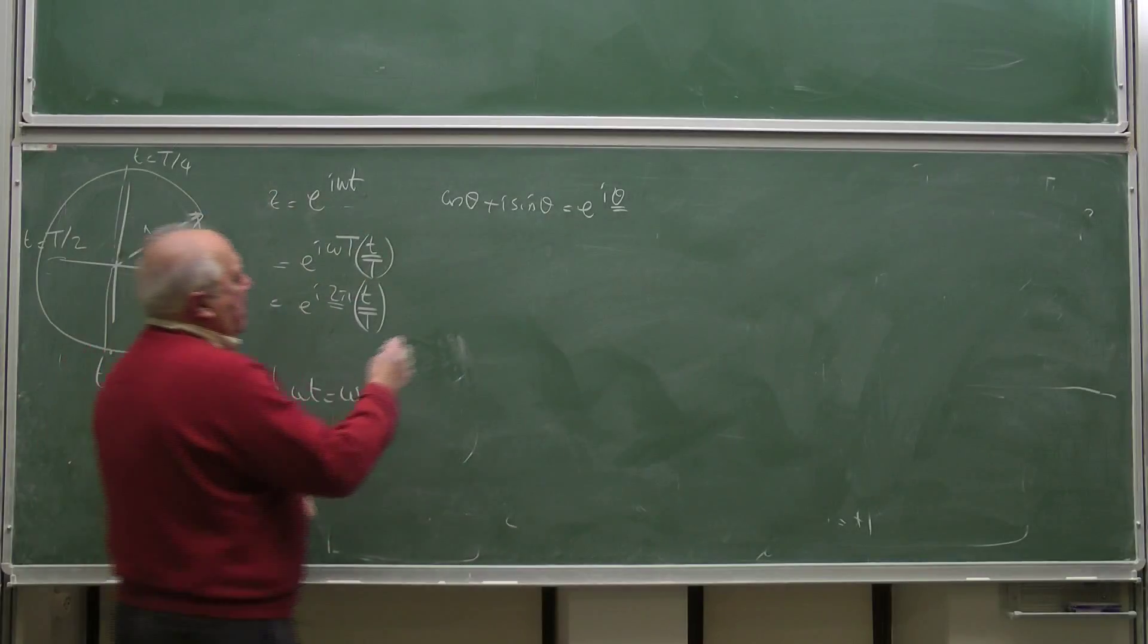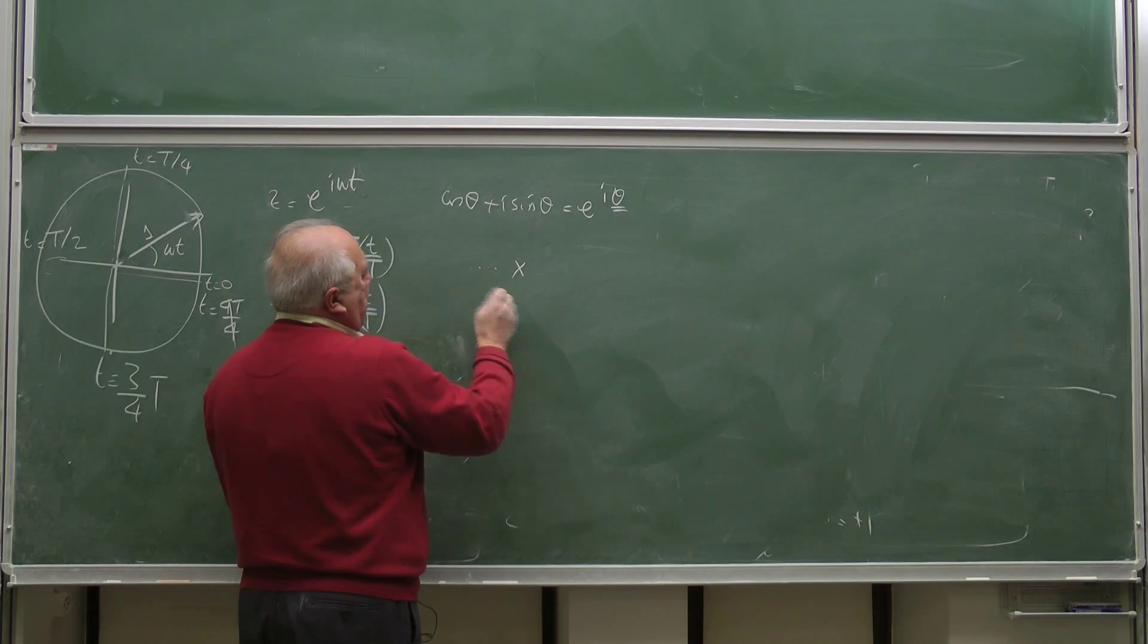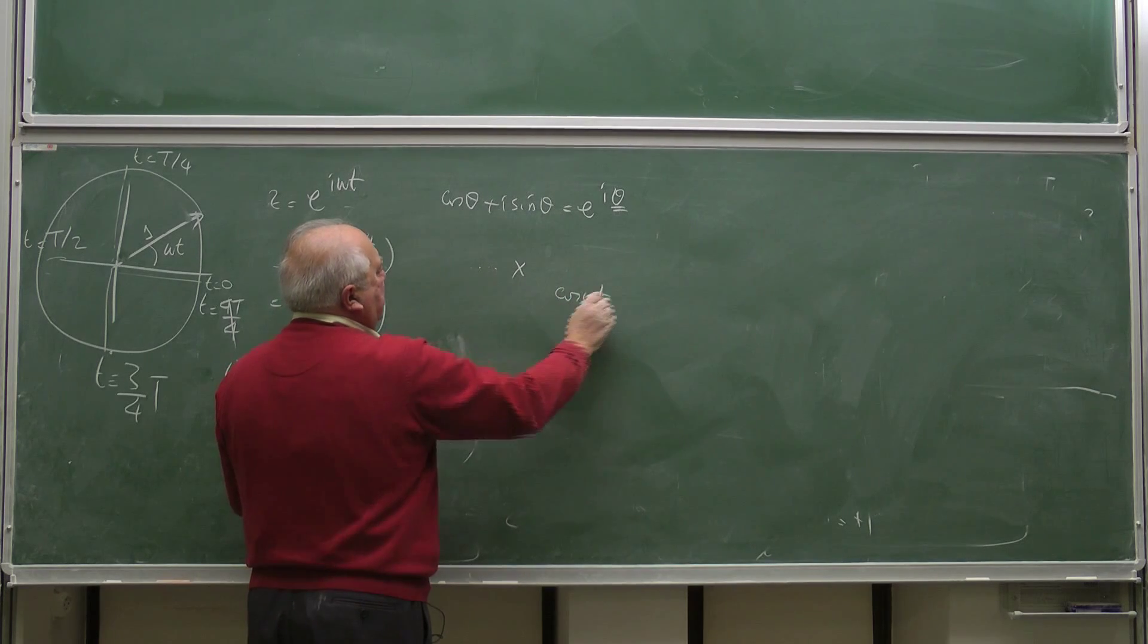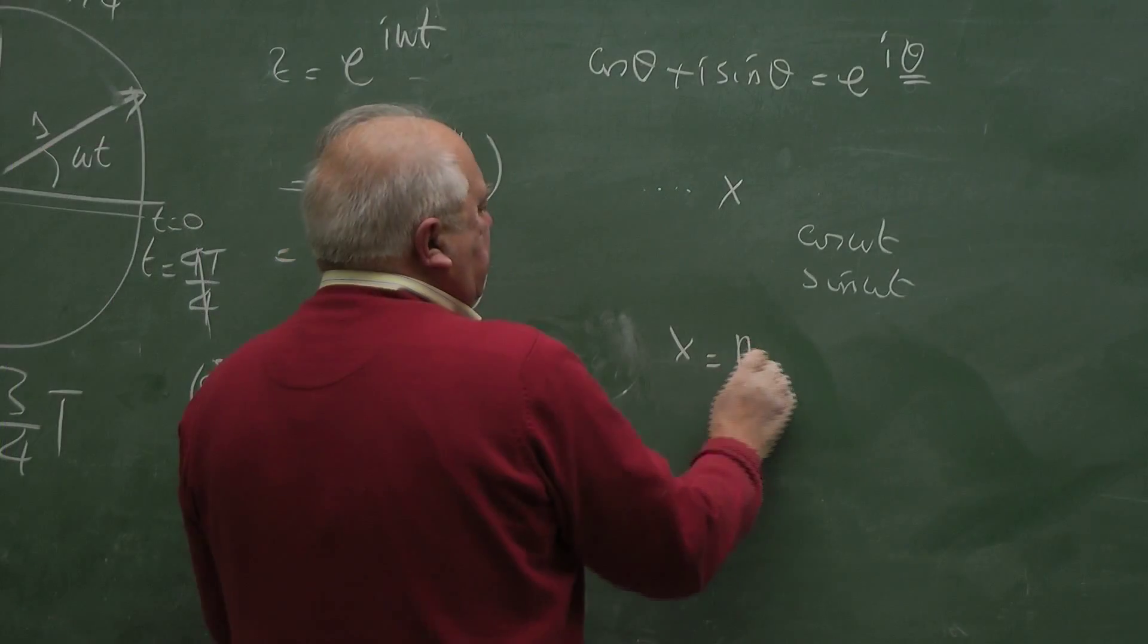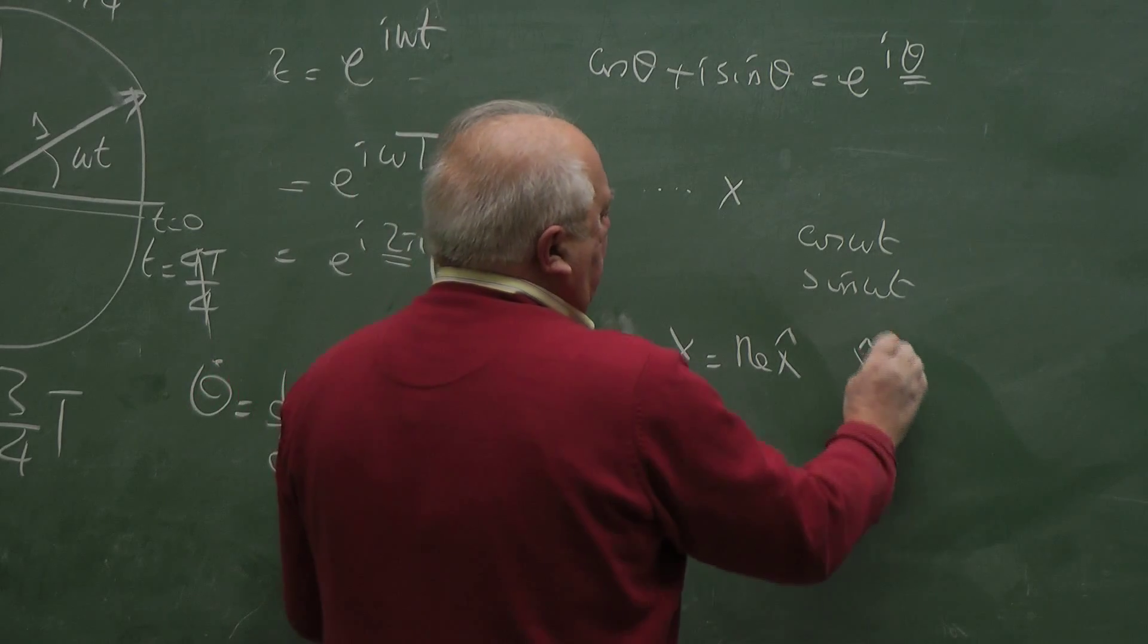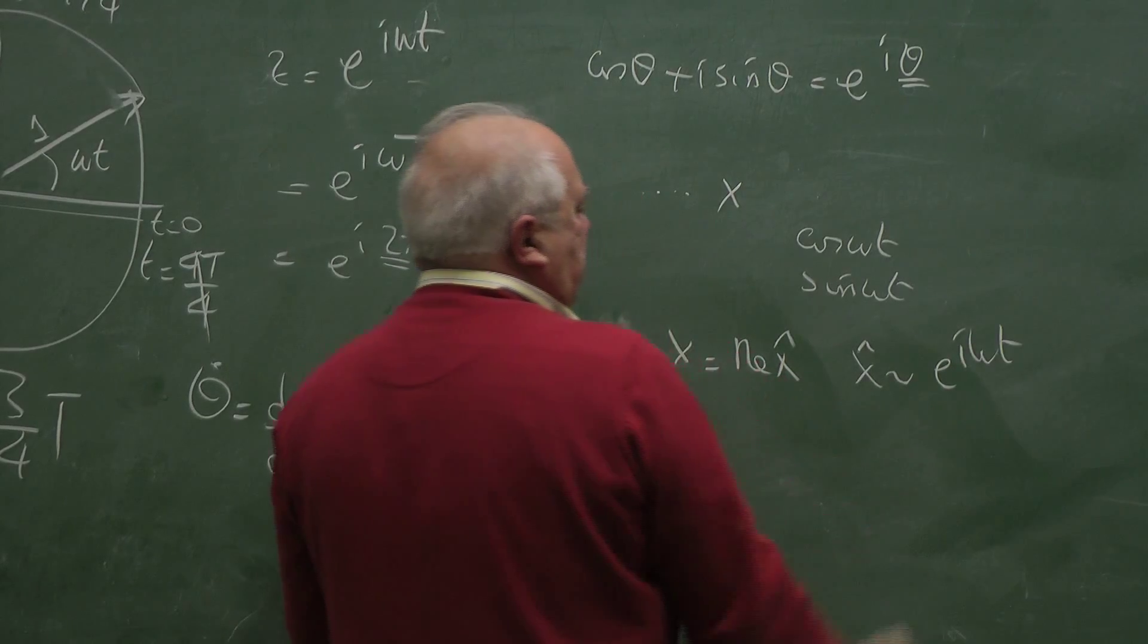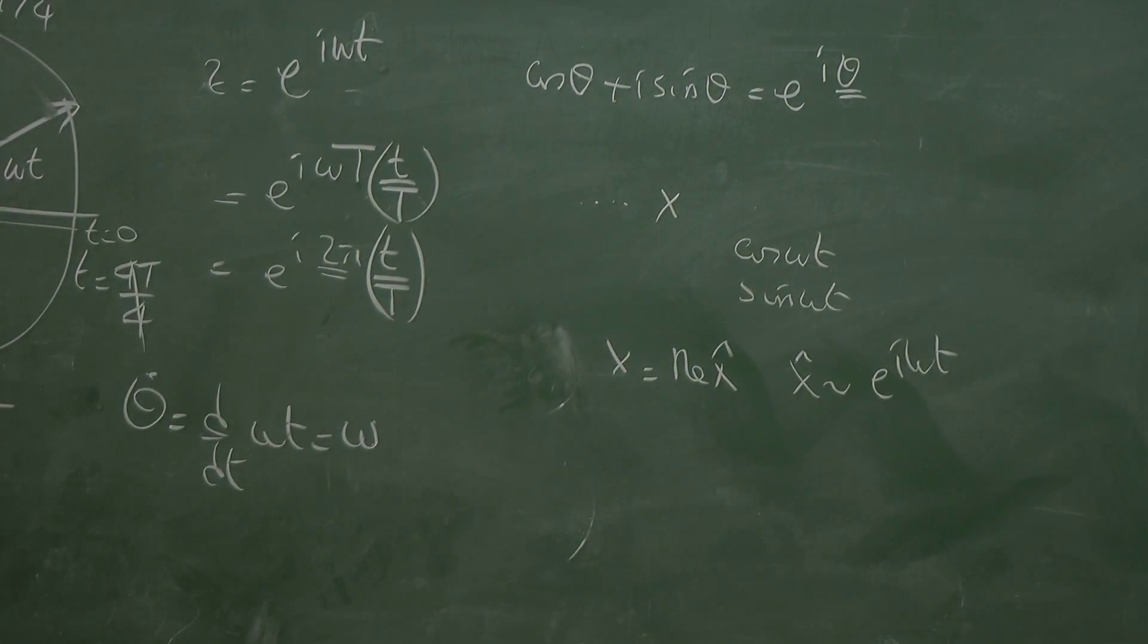So when we have equations that are linear in x, we will use this. And if we have harmonic behavior, harmonic behavior means cosine omega t, sine omega t. We shall write x physical, the real x will be the real part of x hat. And x hat will be proportional to e to the i omega t. Depending on the problem, we will choose different omegas.